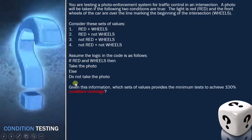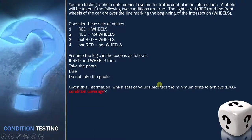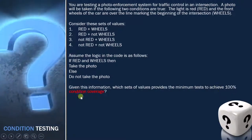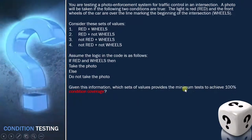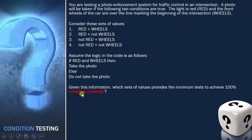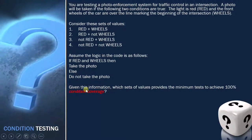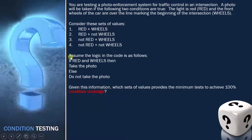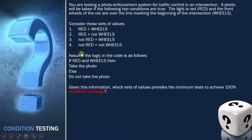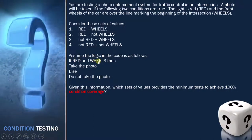The question is: given this information, which set of values provides the minimum tests to achieve 100% condition coverage? To understand this, condition coverage means we look at each atomic condition — here the conditions are 'red' and 'wheels' — and we must cover both true and false for red, and both true and false for wheels.